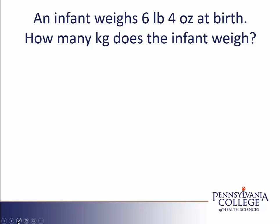I'm going to start my problem working with the four ounces. The conversion that I have memorized is that one pound equals 16 ounces. I'll just work with the four ounces to begin with, and I'm going to use the conversion that I memorized to convert the ounces into pounds. So I'm going to set it up with dimensional analysis, although a proportion would also work. Four ounces over one — that's the given information made into a fraction. Then I'll put 16 ounces on the bottom and one pound on the top.